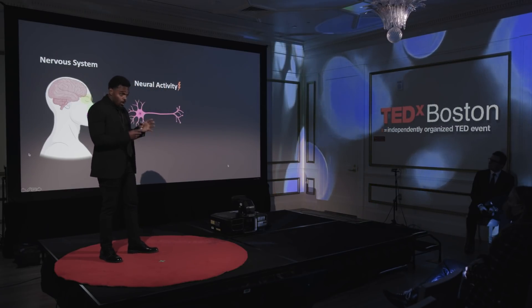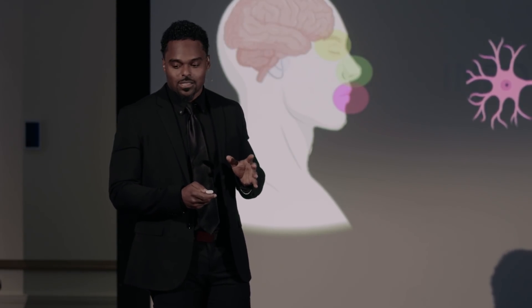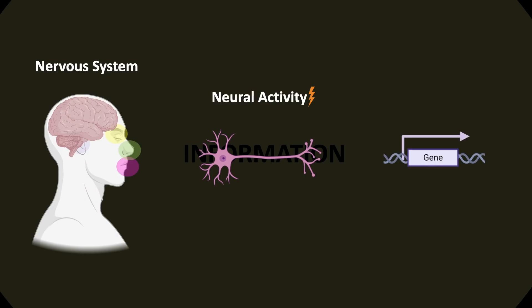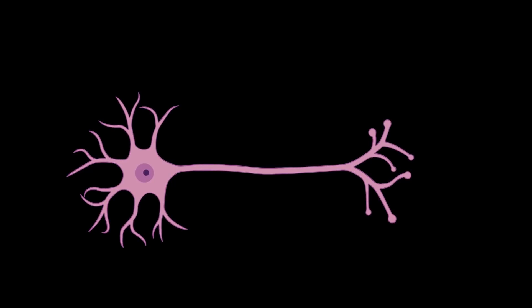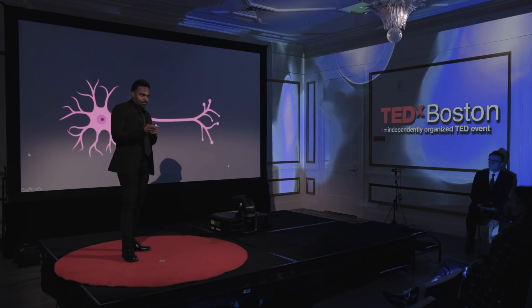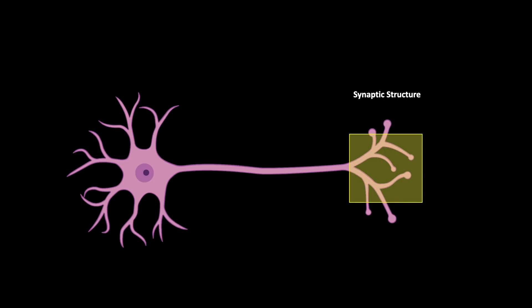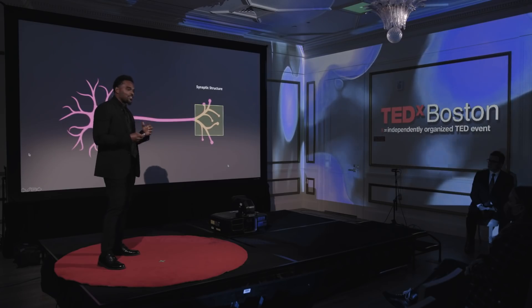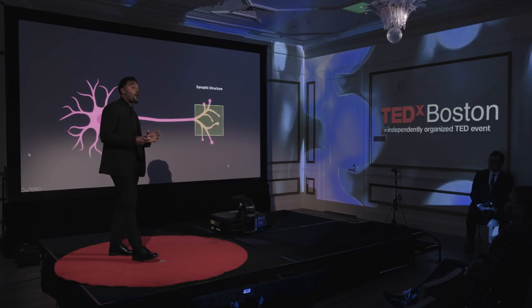When this information needs to be stored in the context of memory, neural activity dynamically directs cellular gene expression, which stably codifies this information inside neuronal cells. But it does so in a peculiar way: it actually stores that information in the morphology of the neuron — in the shape — and it does so at distinct structures called synaptic structures.